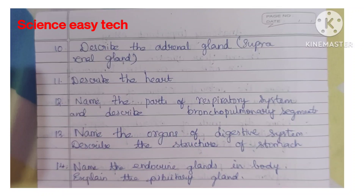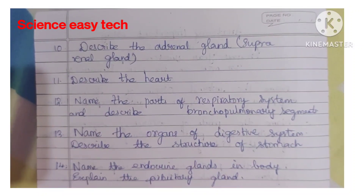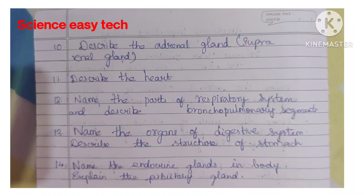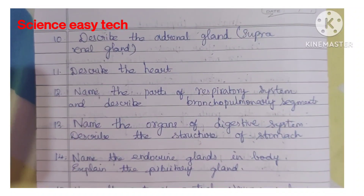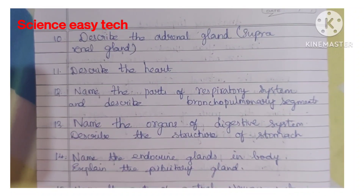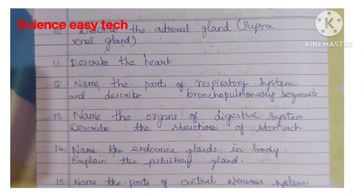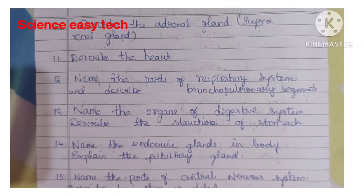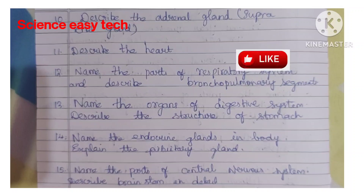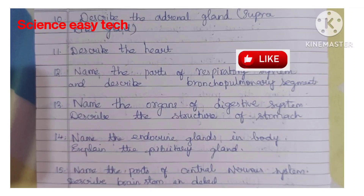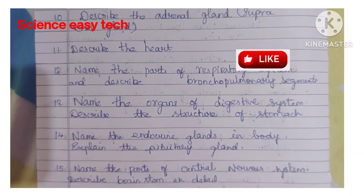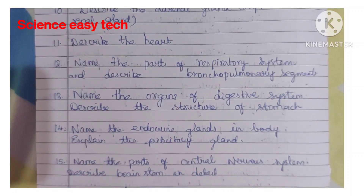Tenth question, describe the adrenal gland, which is otherwise called as suprarenal gland — either they can ask adrenal gland or suprarenal gland, since it is situated above the kidney. Eleventh question, describe the heart. Twelfth question, name the parts of the respiratory system and describe the bronchopulmonary segments.